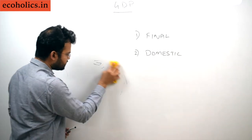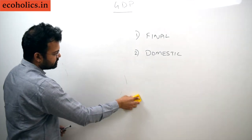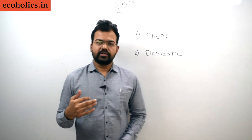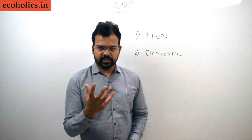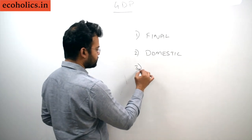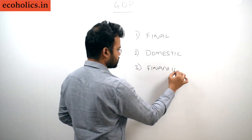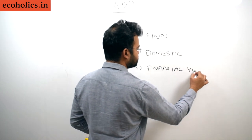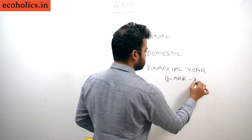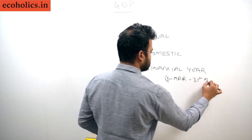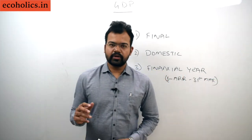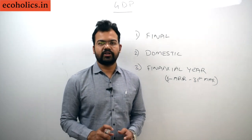The third keyword is 'in a particular year,' which means in a financial year. India's financial year is from 1st April to 31st March. These are the three important keywords under the definition of GDP.